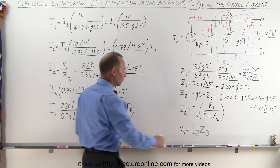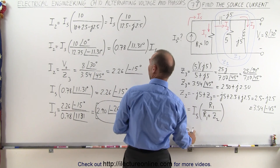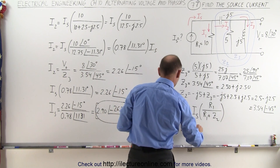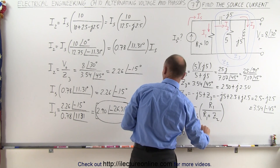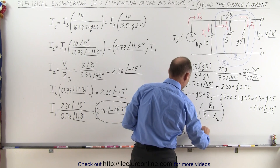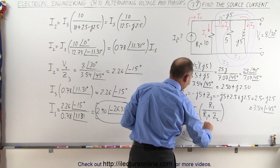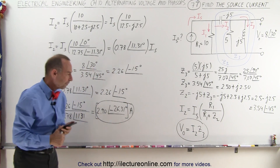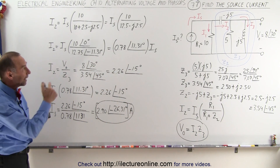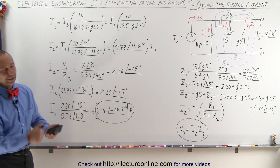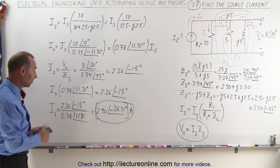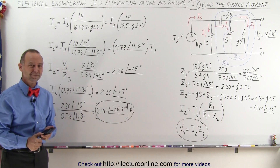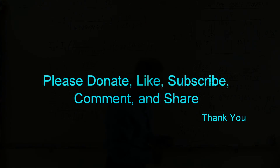So the source current has a magnitude of 2.90 amps with a phase angle of minus 26.31 degrees. V_O can be written as I2 times Z3 — this methodology allows us to solve for the source current without having to calculate I3 separately. That's the final answer, and that's how it's done. Thank you.